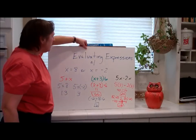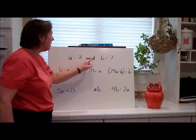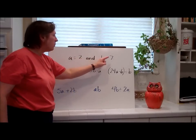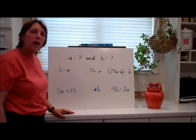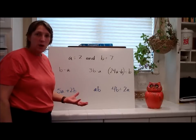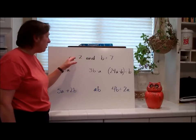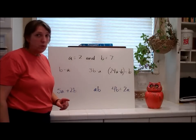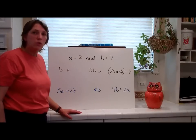That takes us to another set of problems where we have two different letters. A equals 2 and B equals 7. I want you to pause the video and do these problems. You don't have to do them twice — you only do them once, because these are two different variables. Remember to substitute in the values for A and B, then follow the rules of order of operations.